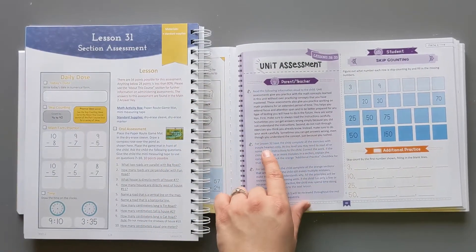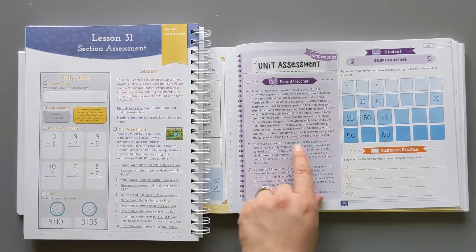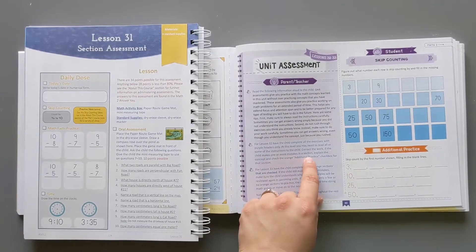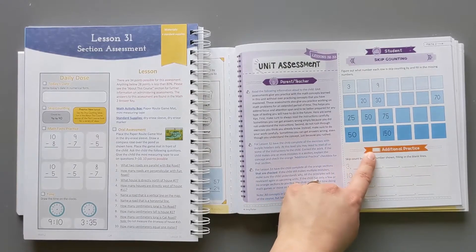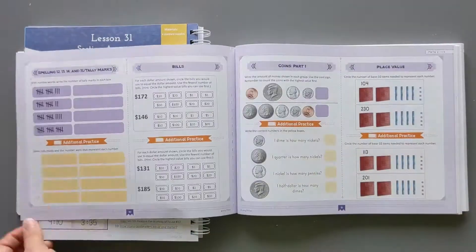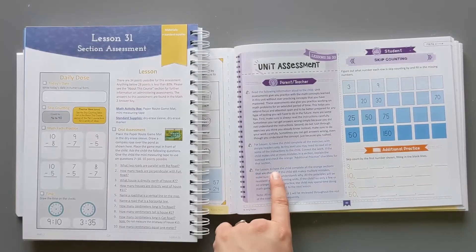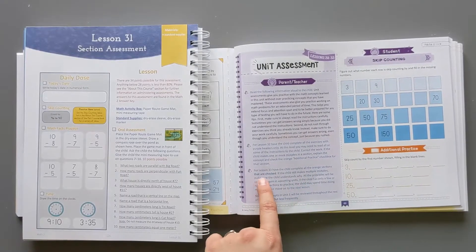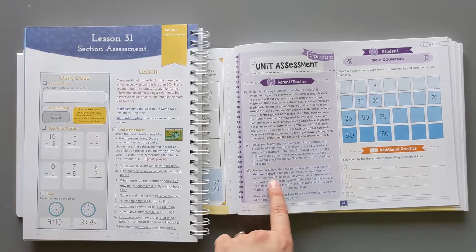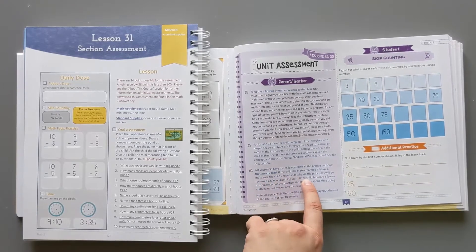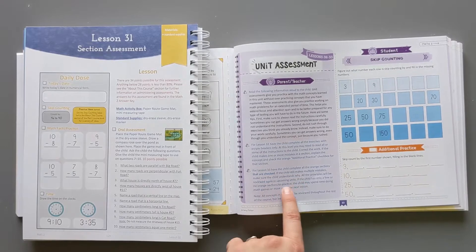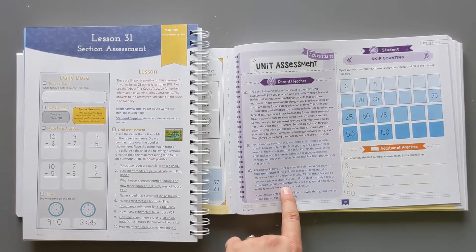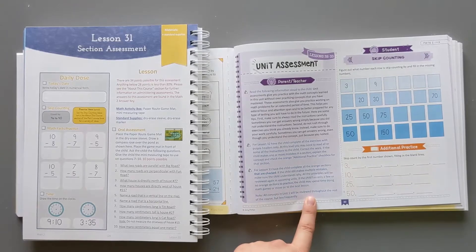Have the child complete all the exercises with purple headers only. Correct the work. If the child makes one or more mistakes in a section, explain the concept and check the orange additional practice checkbox for that section. Okay, so they're going to go through and do this portion. Not these parts. Lesson 33. Have the child complete all the orange sections that are checked. If the child still makes multiple mistakes, make sure the child understands why. All the principles will be reviewed again in upcoming units. If the child has only a few or no orange sections to practice, the child may spend the time doing math games or move on to the next lesson.